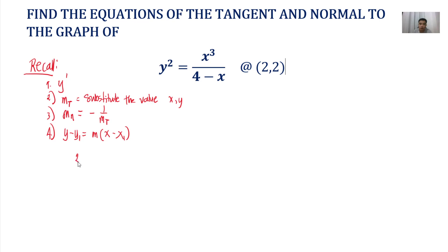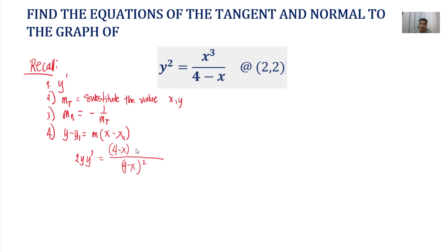The derivative of y squared is 2y — copy the base minus 1 — times the derivative of the base, which gives us y prime. That equals — we use the quotient rule because we have a numerator and a denominator. So: square the denominator, times the derivative of the numerator. The derivative of x cubed is — copy the base minus 1, which gives us 3x squared — minus the numerator x cubed times the derivative of the denominator.